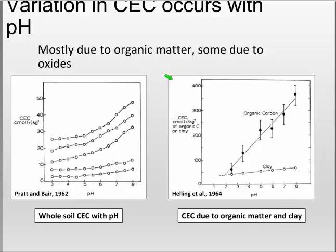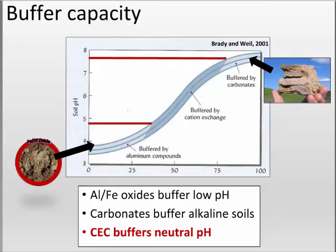CEC can also vary with pH — this mainly matters in soils with a lot of organic matter. As pH increases, you can actually increase the CEC of your soil. So as you lime these soils, you have to consider not only how much additional acidity is present, but also whether the CEC will change. This really only happens in soils with a very high organic matter content, so you don't need to worry about it most of the time.